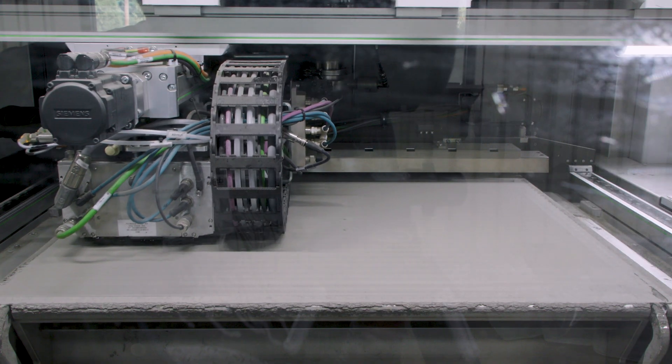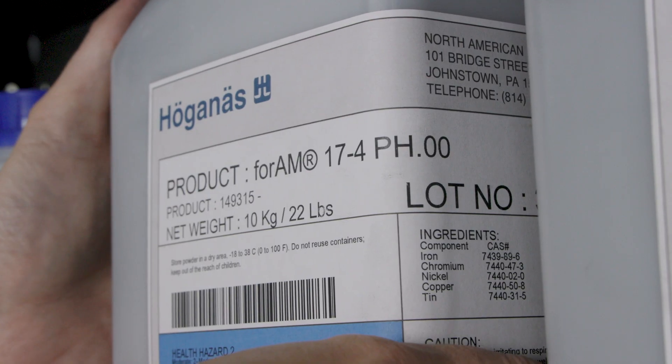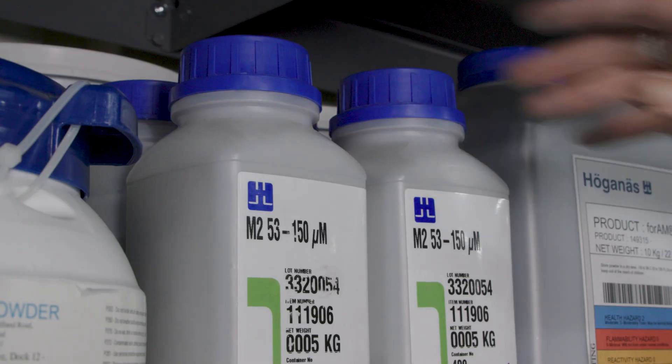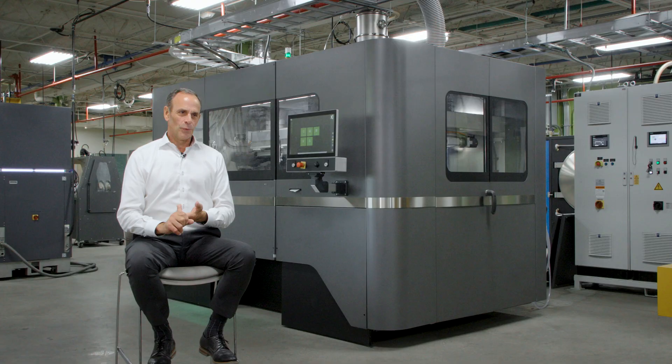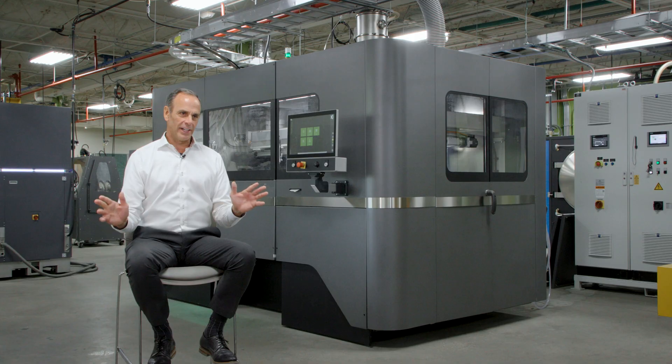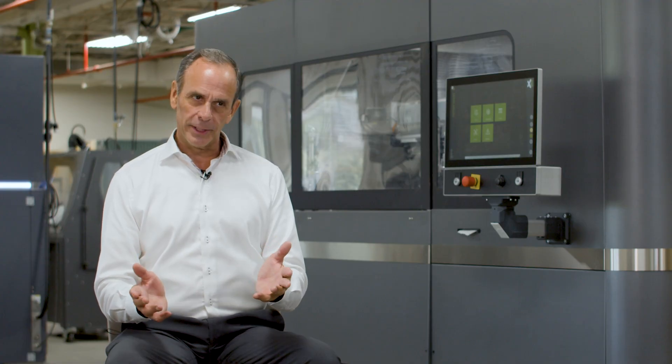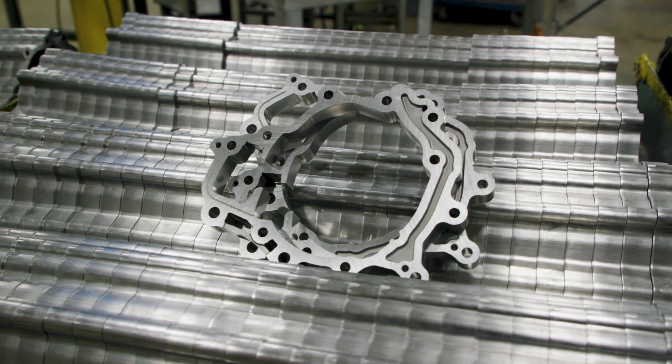Today we're offering four different alloys in binder jetting: 316L and 17-4PH, 4140 and M2 tool steel. We have interests that go far beyond that. Reactive materials like aluminum, so that'll be part of our longer-term strategic plan.